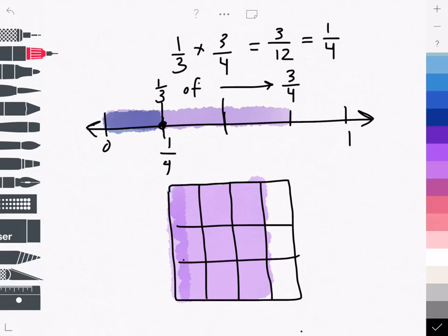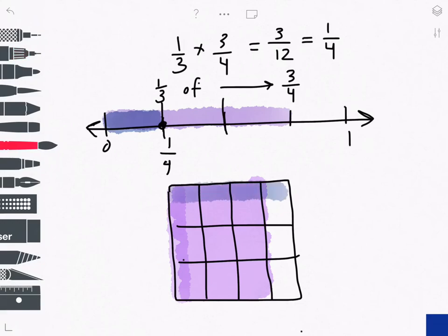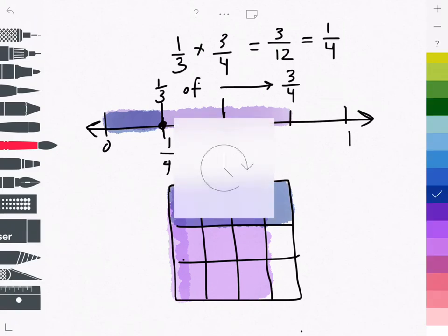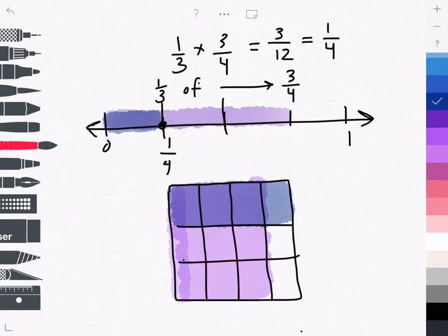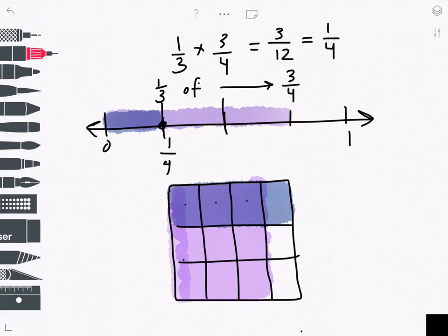Now I'll highlight 1 third, and this overlapping area represents my product. So I've got 1, 2, 3 cells with an overlap out of 12 total cells.